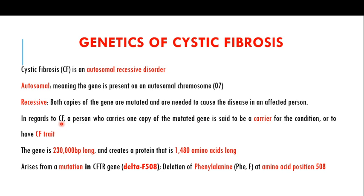A person who carries one copy of the mutated gene and one normal copy is called a carrier for cystic fibrosis, or is said to have the cystic fibrosis trait. These persons will not show symptoms of cystic fibrosis, but they are carriers and have the potential to transfer the disease to the next generation.